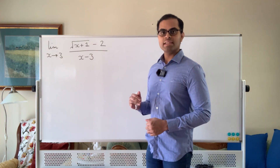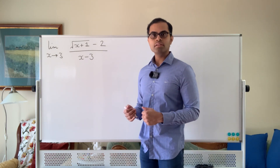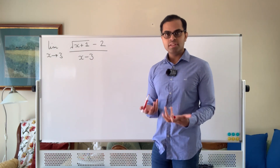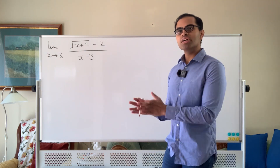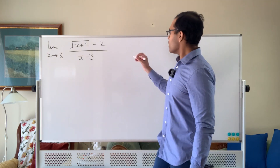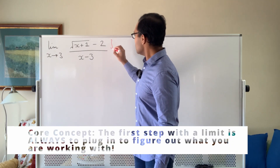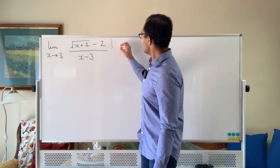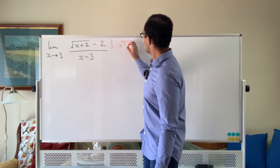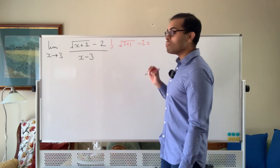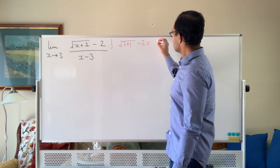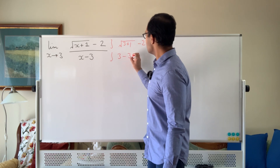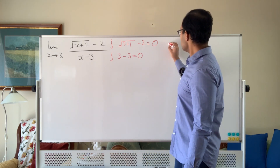So the first step, when you have a limit as x goes to 3 of something, is to just plug in what happens at x equals 3. Let's just make sure it really is 0 over 0. When x equals 3, we get the square root of 3 plus 1 minus 2, which is the square root of 4 minus 2, which is 0. And in the bottom we get 3 minus 3, which also equals 0.